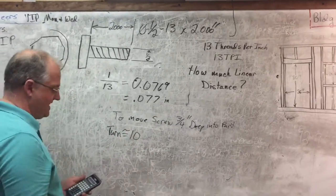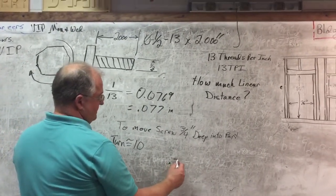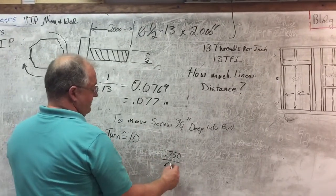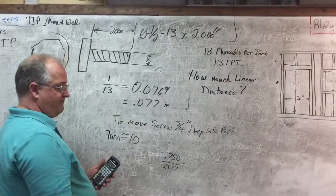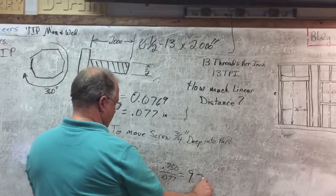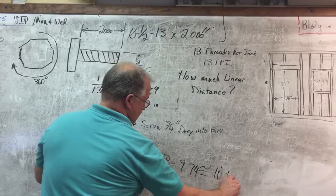Basically how I got that was three quarter point seven five zero divided by my point zero seven seven. That's how much I move with one full rotation. It gives me 9.74 and I'm just going to round that up to ten turns.